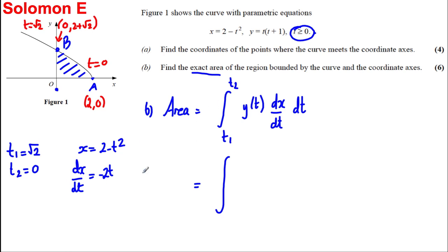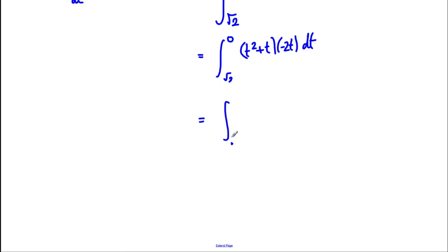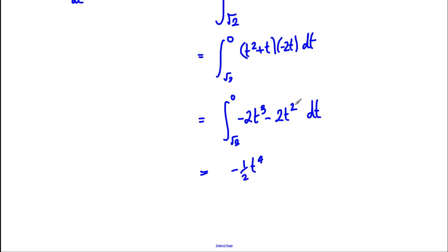The integral becomes ∫ from √2 to 0 of t(t + 1) · (−2t) dt. Expanding, this is ∫ from √2 to 0 of (t² + t)(−2t) dt = ∫ from √2 to 0 of (−2t³ − 2t²) dt.